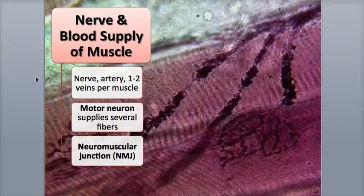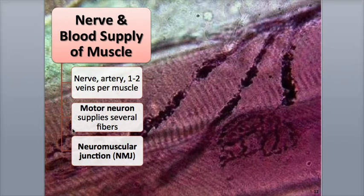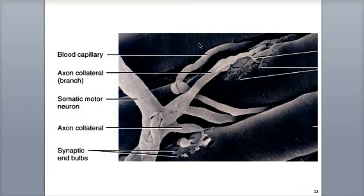A typical arrangement consists of the muscle being penetrated by one nerve consisting of somatic motor neurons, with an artery and one or two veins. Each somatic motor neuron consists of a single axon having multiple branches that extend to different skeletal muscle fibers. There are abundant microscopic blood capillaries found in muscle tissue, and muscle fibers are never far away from at least one capillary. The capillaries supply the muscle with oxygen and nutrients like glucose and fatty acids, and remove wastes and heat generated during muscle contraction.